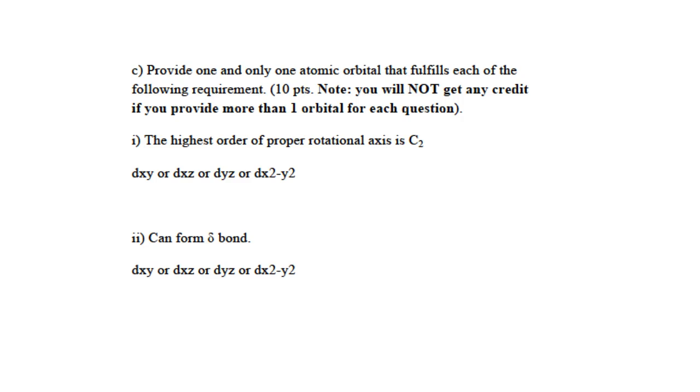An orbital that can form delta bond: this again limits our choice to d orbitals because delta bonds can only be formed by d orbitals by aligning four lobes together. So delta bond looks like two sets of pi bond perpendicular to each other. This can be done by having dxy with dxy or dxz with dxz. Again, any one of the four d orbitals should work.